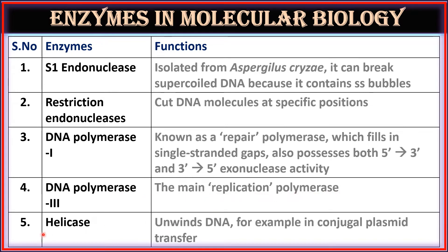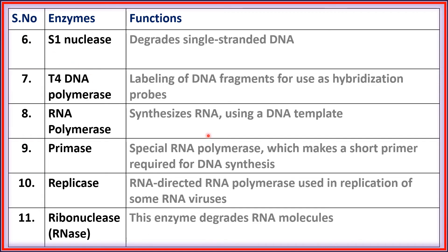Fifth, helicase: this enzyme unwinds DNA, for example in conjugal plasmid transfer. Sixth, S1 nuclease: this enzyme degrades single-stranded DNA. Seventh, T4 DNA polymerase: involved in labeling of DNA fragments for use as hybridization probes.